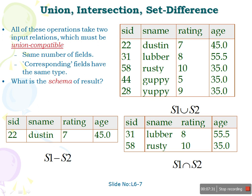When performing union, intersection, and set difference, we must maintain union compatibility. Union compatible means the tables should have the same number of fields with the same names. Corresponding fields must have the same type, and we must also maintain the sequence — whatever sequence the columns appear in the first table must be repeated in the second table. Only then can we say the tables are union compatible and perform union, intersection, or set difference.